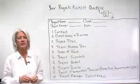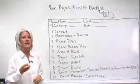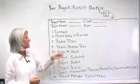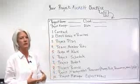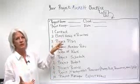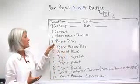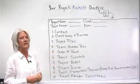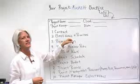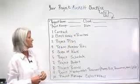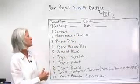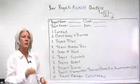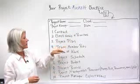Number one is the contract — making sure you have a signed contract that authorizes you as the project manager to begin this project. Not only the contract for the project but also contracts for other vendor partners who are part of this project. Number two is clearly identifying and documenting the client needs and the priorities. Because as time changes throughout the project, those needs and priorities are going to change, so you want to document what those initial baseline needs and priorities are.